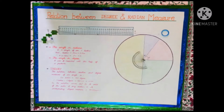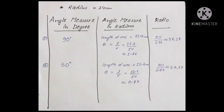Through this model, we can measure the length of arc subtended by any degree of angle and show the relation between degree and radian measures. The data for 90 degrees and 50 degrees shows that the approximate ratio of degree to radian measure comes out to be 57.3 approximately. This confirms the relation that 2π radians is equal to 360 degrees.